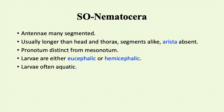In suborder Nematocera, the antennae are many-segmented, usually longer than head and thorax, and the segments are similar with arista present at the tip. The pronotum is distinct from the mesonotum — 'notum' refers to the chitinous plates on the dorsal surface of the insect. Larvae are either eucephalic or hemicephalic and are often aquatic.